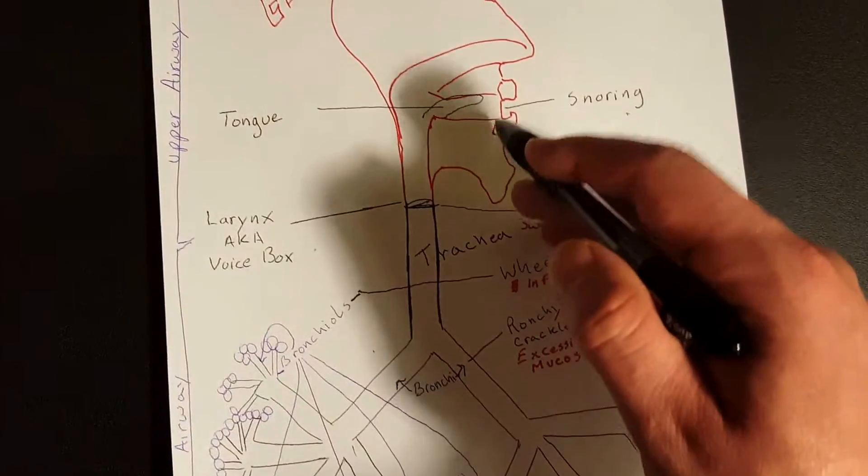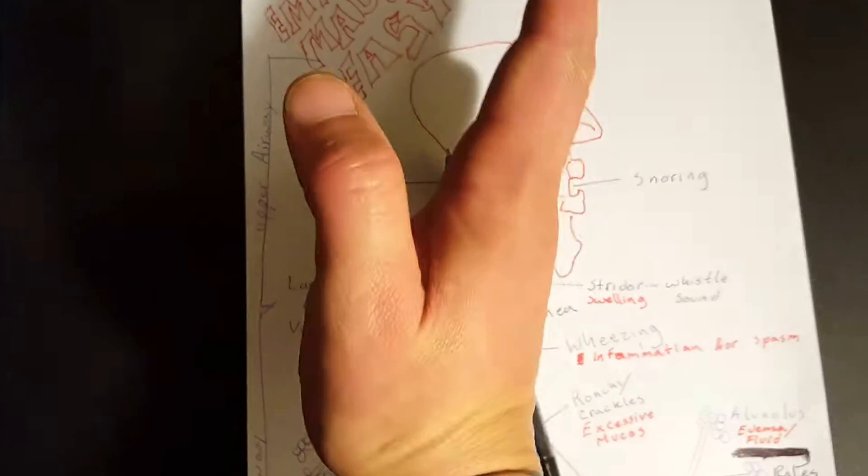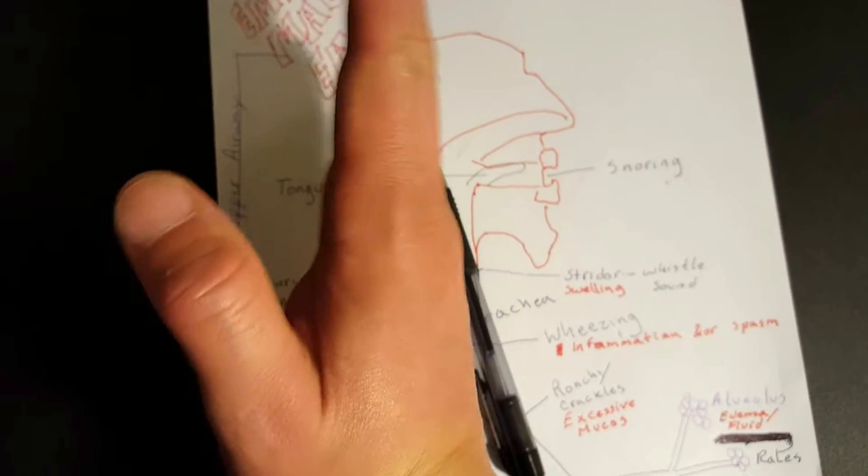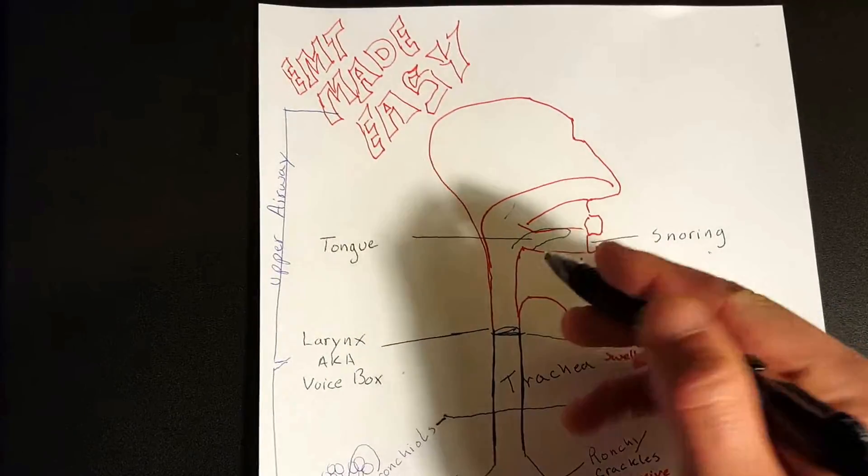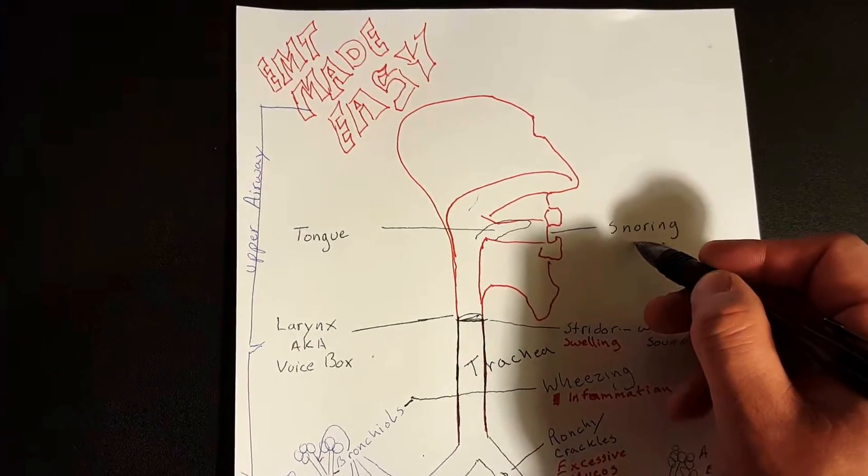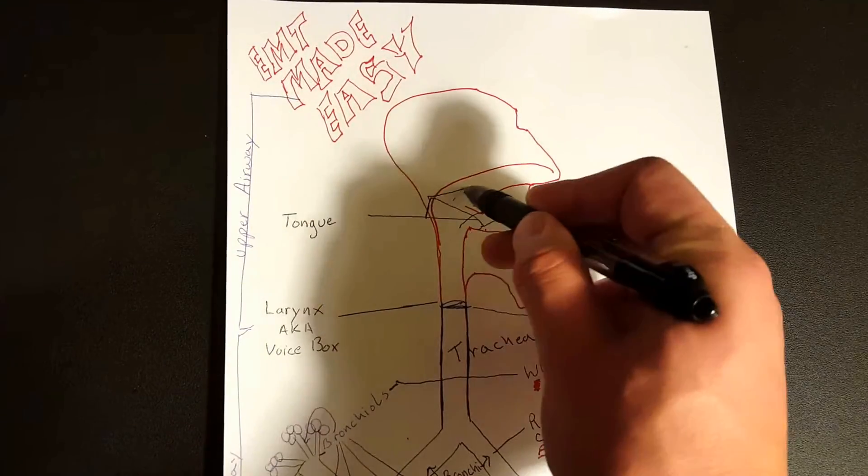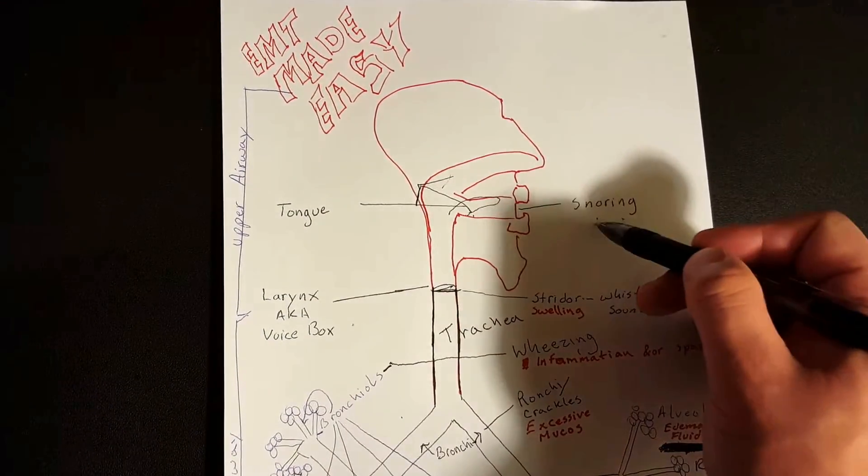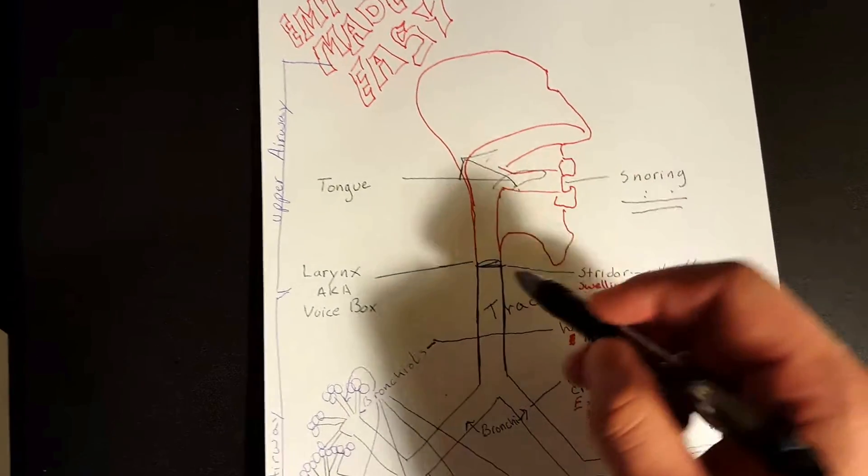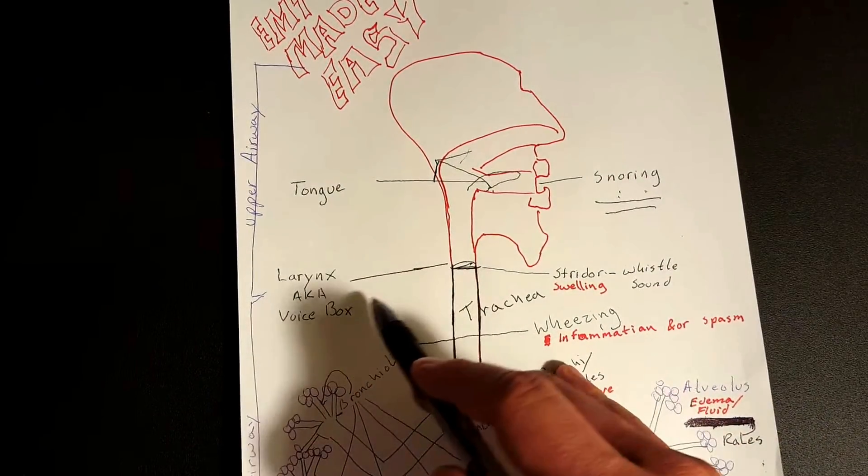So if your tongue is blocked back and it's hitting the back, the pharynx part of your upper airway, that's going to produce snoring. So that's an upper airway obstruction - tongue blocked back, patient unconscious, laying on their back. That's going to produce snoring.